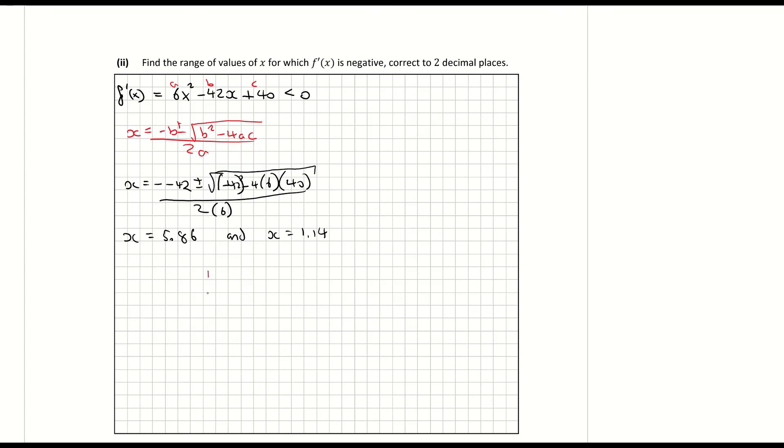So if I sketch that out on my coordinate graph here for a second. So this is my y-axis and my x-axis and I plot the two points here. It's a positive quadratic so it looks something like that and the question is looking for where it's negative so that's below the x-axis. So I'm basically looking for this region in here. I'm looking for everything here. So it's between x has to be between positive 1.14 and positive 5.86. So therefore my final answer here is x is between 1.14 and 5.86.